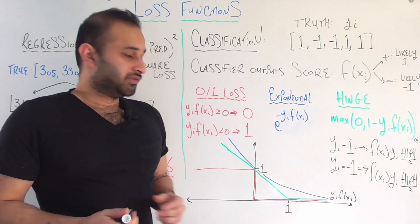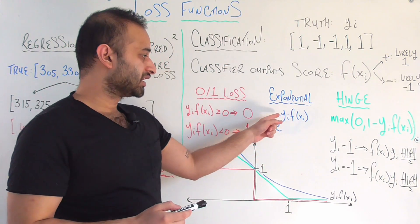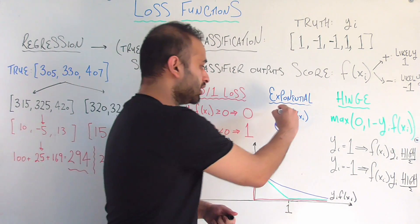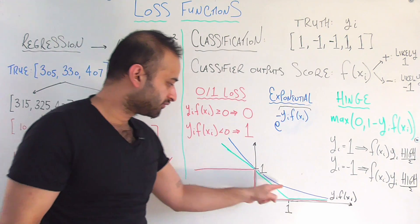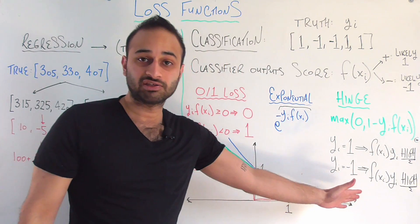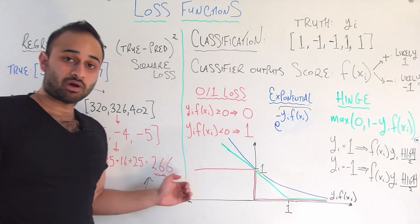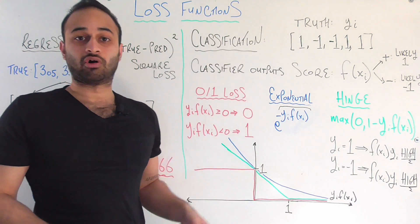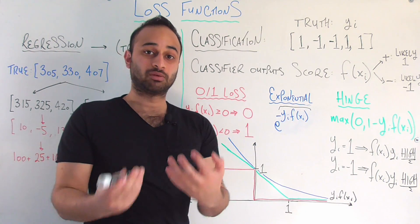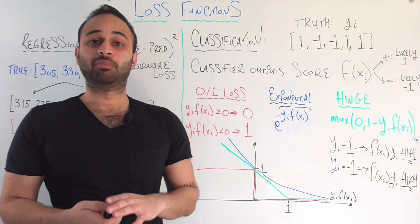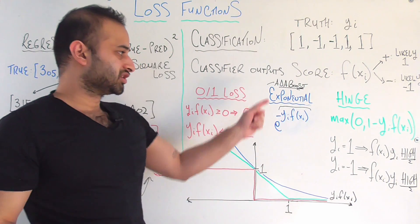That's where the exponential loss comes in. The exponential loss is literally e to the power of negative y sub i times f of x sub i. The bigger this quantity is, the closer your loss gets to zero. The more negative it is, the loss grows exponentially — very fast. That's the behavior we wanted, and it fixes the problem of the 0-1 loss. The exponential loss is used in, for example, the AdaBoost algorithm.